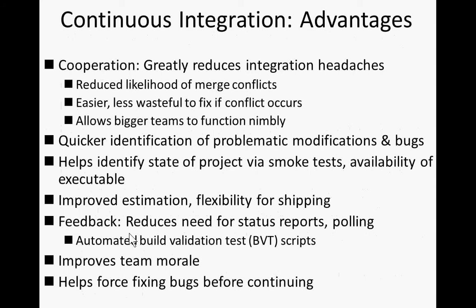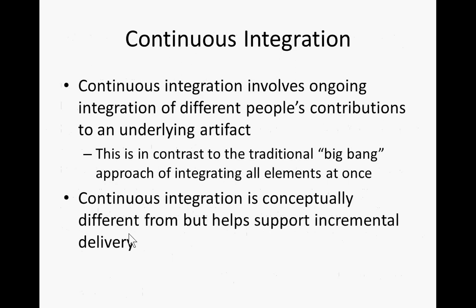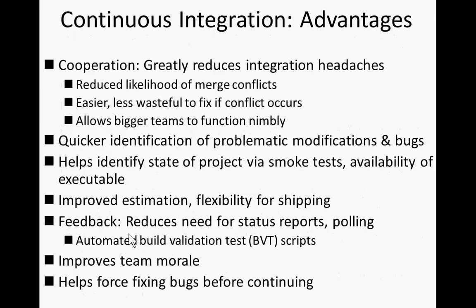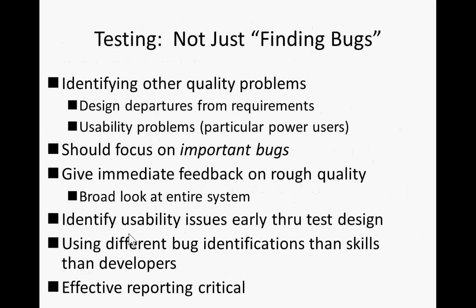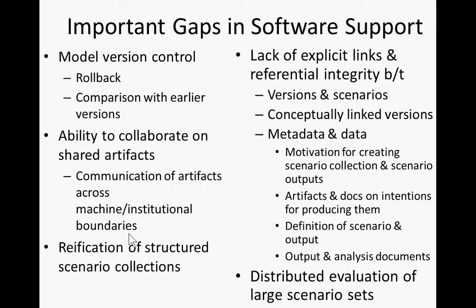One of the things helped by version control systems is continuous integration — being able to bring different parts of a model together. Managing process complexity: we talked earlier about the use of version control systems and systems like Silver to cross-link the different components of a project, so that the assumptions and intentions behind them have referential integrity maintained between different artifacts, between output and the parameter assumptions and the particular version of the model.